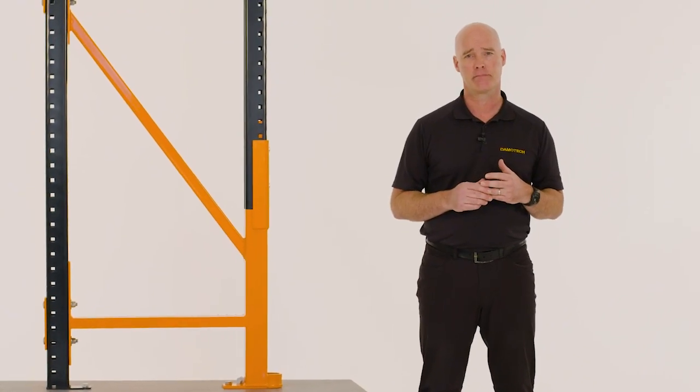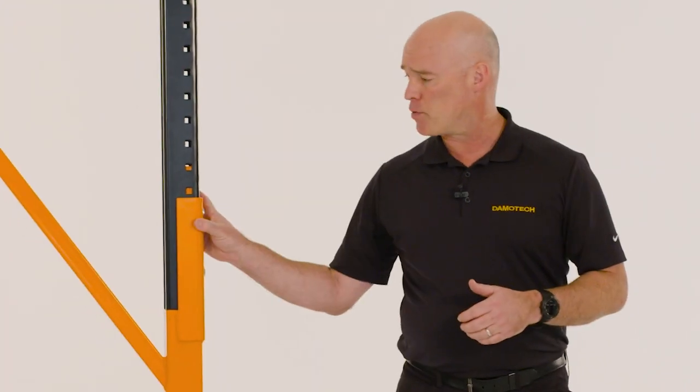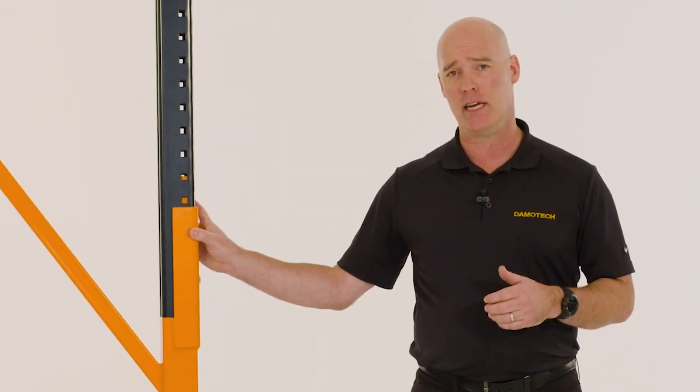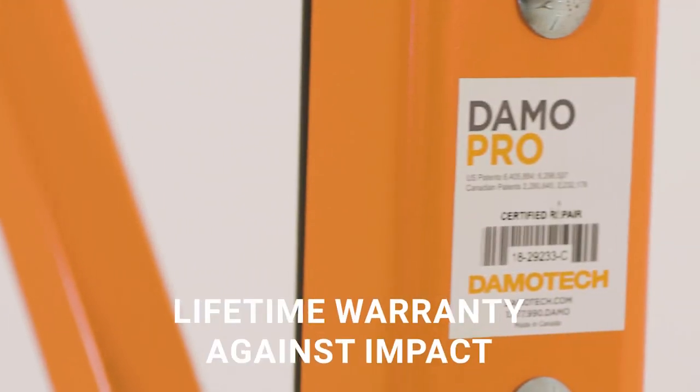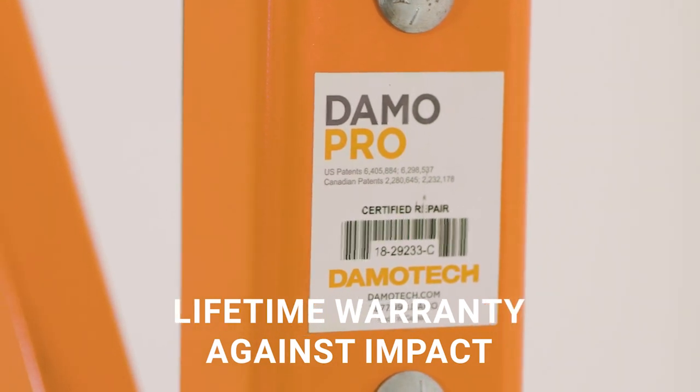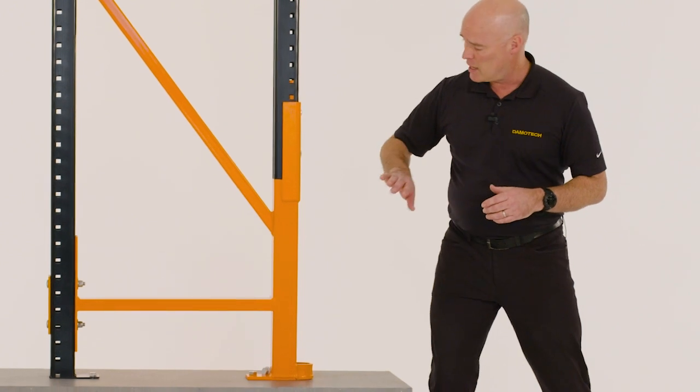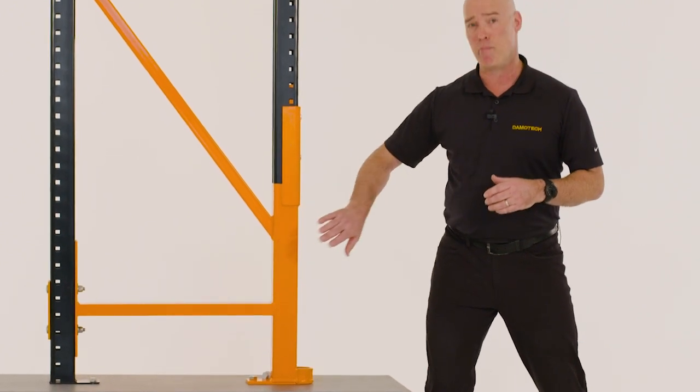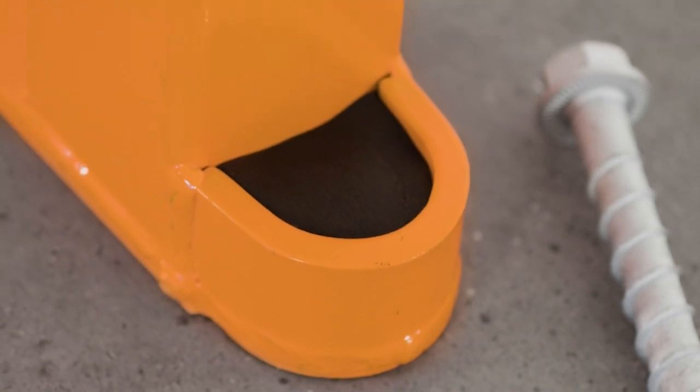And once it's repaired, will my rack hold the same capacity? Yes. Because it's an engineered solution, any repair kit that we install will indeed restore the load capacity of that position. And does it come with a warranty? It does. Probably one of the top benefits of what we have, it's a lifetime warranty against impact. So to the extent we put one of these in with our certified installers and somebody were to run into it, bend it in some way, shape or form or shear the anchor, we'll come in and replace it free of charge.